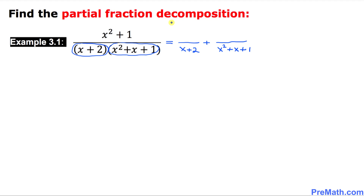The next step: whenever we are dealing with a linear factor, we always put a constant A in the numerator — I'm sure you learned that from previous episodes. And as far as the quadratic factor is concerned, we always put Bx plus C in the numerator. Always remember that is going to be the case when dealing with a quadratic factor.